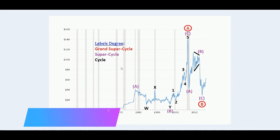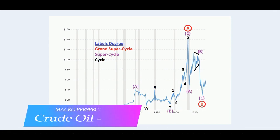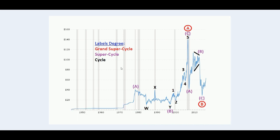When looking at crude oil WTI, we can clearly establish that we are trading within a grand supercycle ABC, which is basically marked on a chart at A, B, and of course we would be expecting the C wave to pan out in time. Now let's analyze this piece right here.